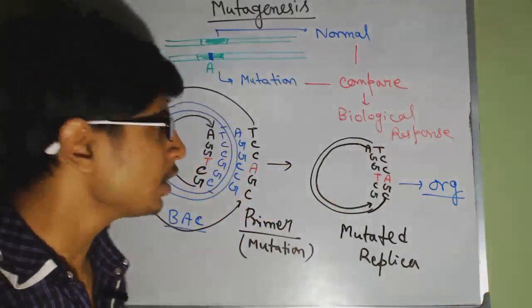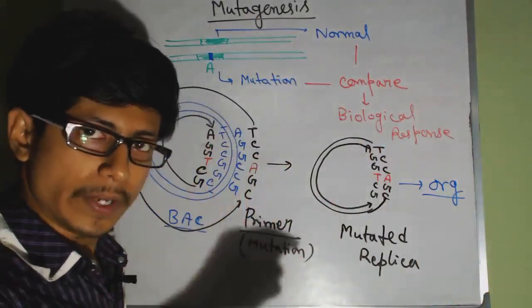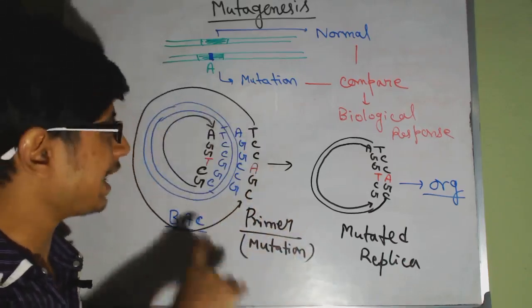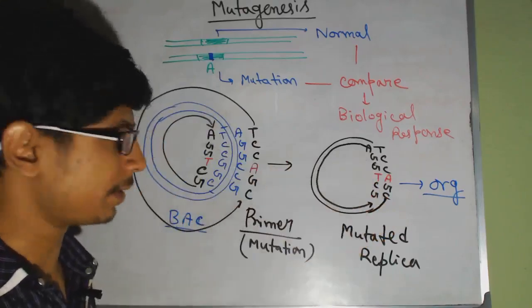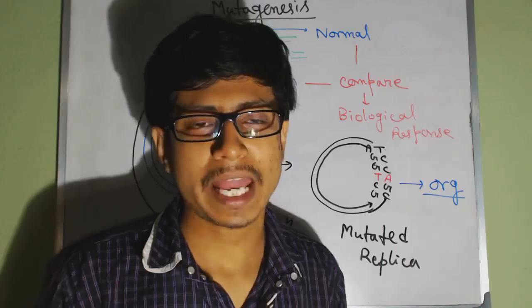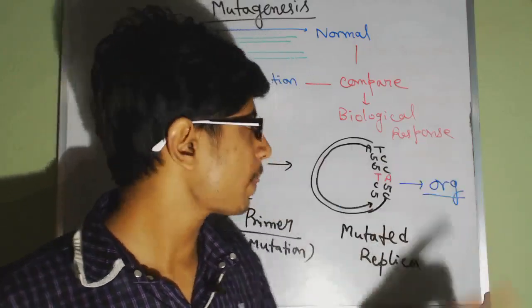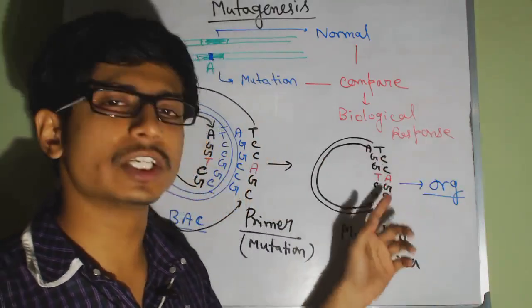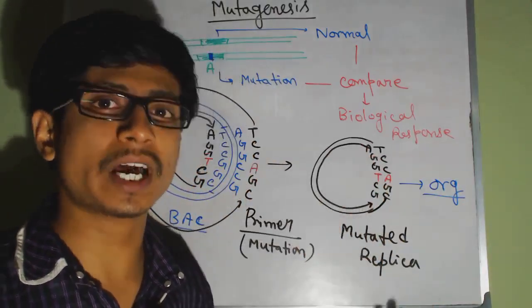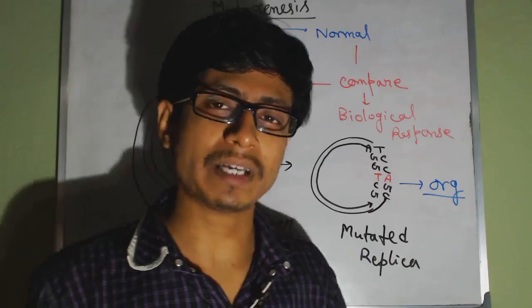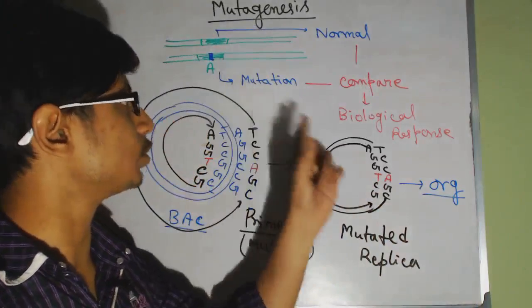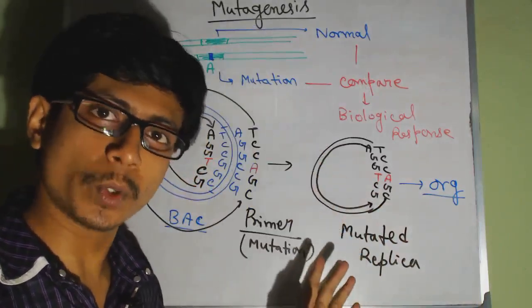So this is the idea. We mutated a specific sequence, and using a replica as a vector, vector as a replica, and then we produce the replica with the mutation, and then insert it into the organism. And once you insert it to the organism, the product which will be made from this gene will be different, and we will see the effect of that product in that organism's body by the response from that organism. And by looking at the response, we can know the function of those genes that are involved.